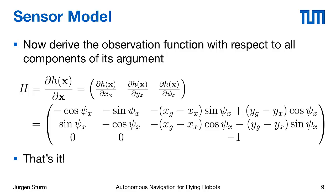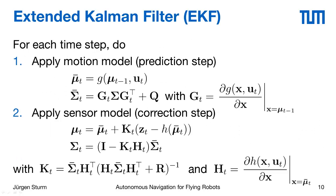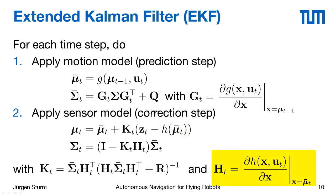For the extended Kalman filter we need to derive the observation function because it is again non-linear, similar to the motion model. We derive with respect to all components of the state — x, y, and psi — obtaining a 3×3 Jacobian matrix H. To summarize: we constructed the motion model G and derived it with respect to the state giving capital G; we constructed the sensor model and derived it giving capital H, which we need to compute the Kalman gain. These are then plugged into the EKF equations.